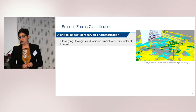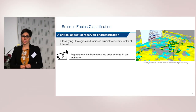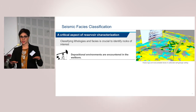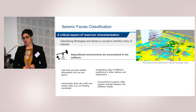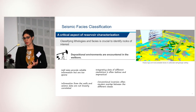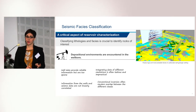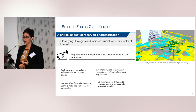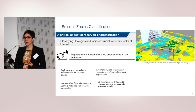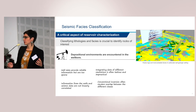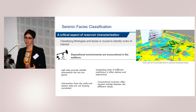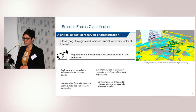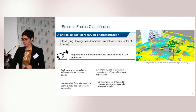For seismic facies classification, all the hard input data are encountered at the wellbore and we need to extend that all over the reservoir. Several challenges arise: we have sparse data; the information between seismic and well data is not linearly correlated; integrating data of different resolutions manually is often tedious and impractical. When you do facies classification through traditional inversion, you may get results where classes overlap because facies are not completely discontinuous — there is no clear limit between different lithologies, so the classification can overlap with quite a high rate of confusion.